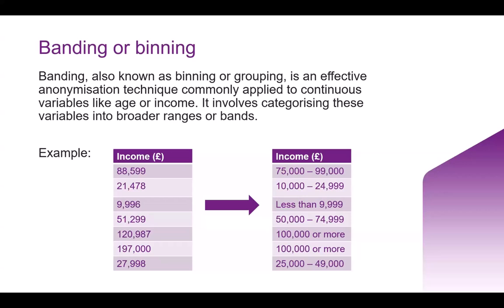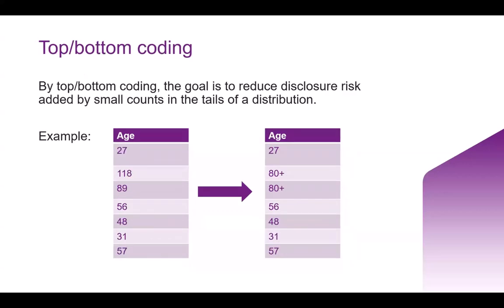Top and bottom coding: sometimes low frequency counts means there's a greater risk of disclosure, and it only applies to certain groups within a variable or characteristic. For example, age itself is not normally problematic. But if your age is over 100, since so few people globally make it to 100, that becomes a potentially disclosive variable. Consequently, you can do what we call top and bottom coding, which helps consolidate the categories at the extremes of your distribution.